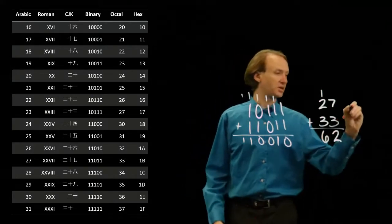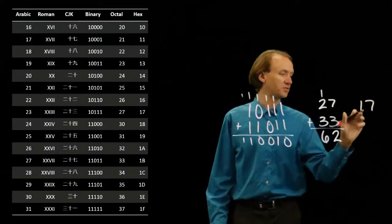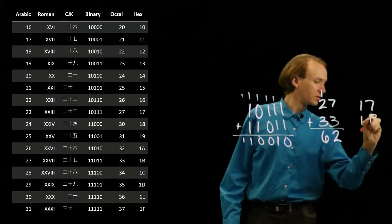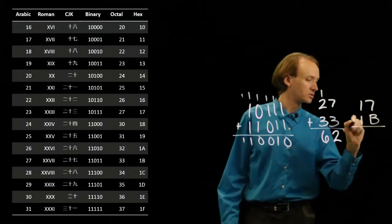In hexadecimal, it's the same thing. So, I have 17 for 23 and 1b for 27.